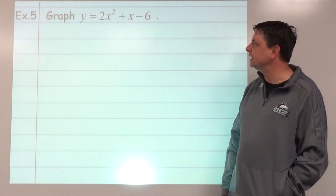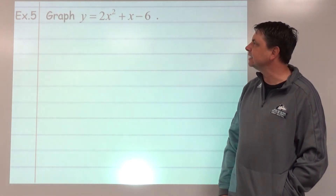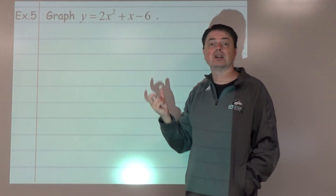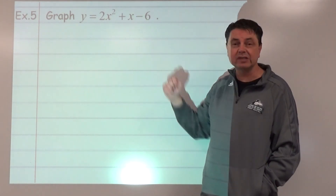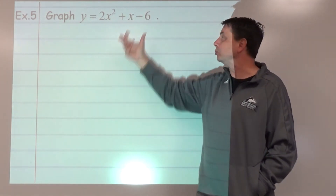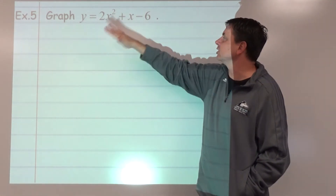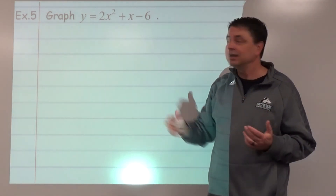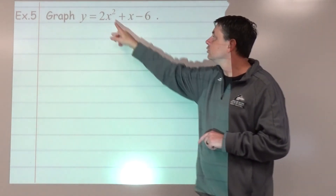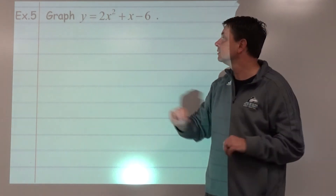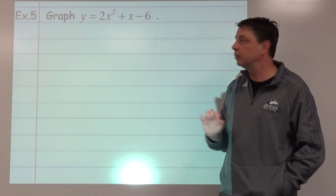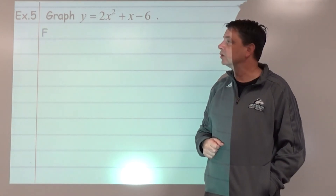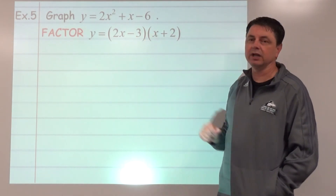Example 5: graph y equals 2x squared plus x minus 6. We've done this type before using a, b, c, but here I want to show factoring as another strategy. Factor: three terms, no GCF, use the double-bubble method. 2x squared gives factors of 2x and x. Think of ways to make the product negative 6. Pause here to find the correct factored form. The answer is y equals (2x minus 3)(x plus 2).